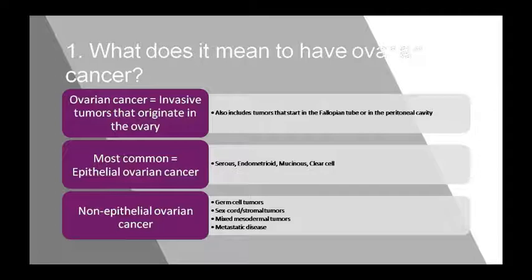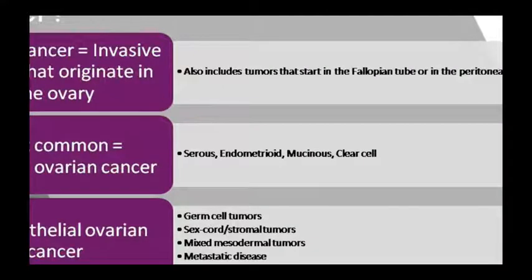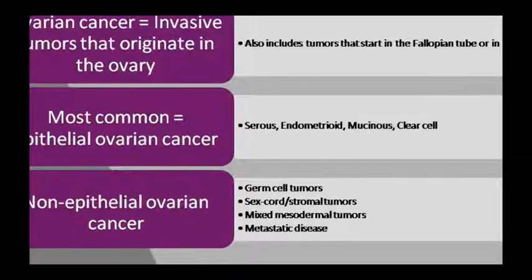Ovarian cancer is an invasive tumor which can originate from various sources. The most common is epithelial ovarian cancer. Ovarian cancer can also be non-epithelial. The same invasive tumor can be found in the fallopian tube or peritoneal cavity. Common epithelial types include endometroid, mucinous, and clear cell.